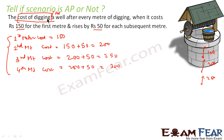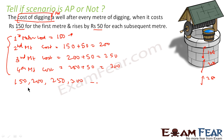The cost per meter forms the series: 150, 200, 250, 300, and so on. The difference between each consecutive term is 50. Since the difference is constant, we can say that this is an AP.